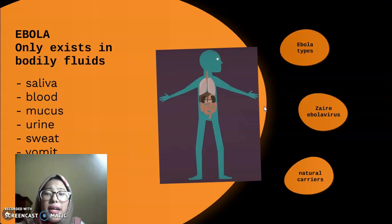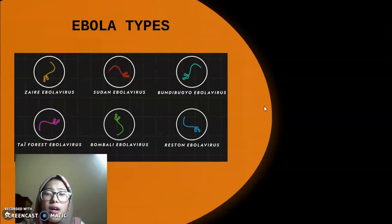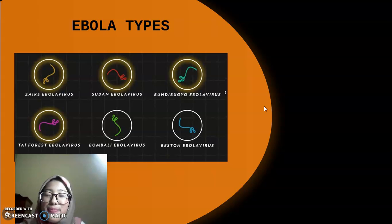Ebola is caused by six species of virus with four known to cause sickness in humans. Within eight to ten days, those infected by Ebola may experience symptoms drastically ranging in severity, from fever to diarrhea and vomiting to internal and external bleeding, often from the eyes, nose, and mouth.